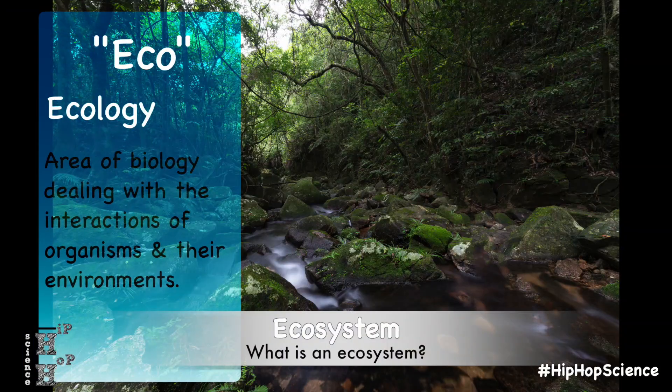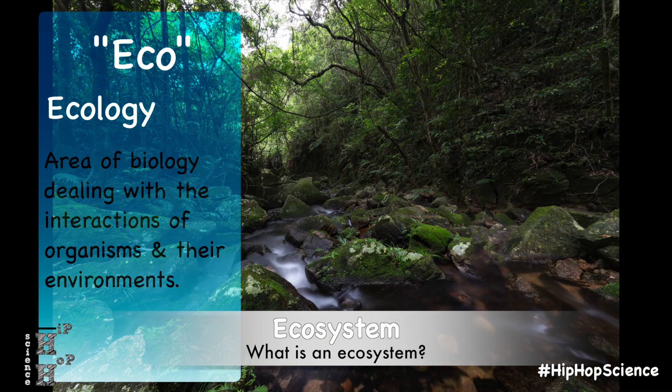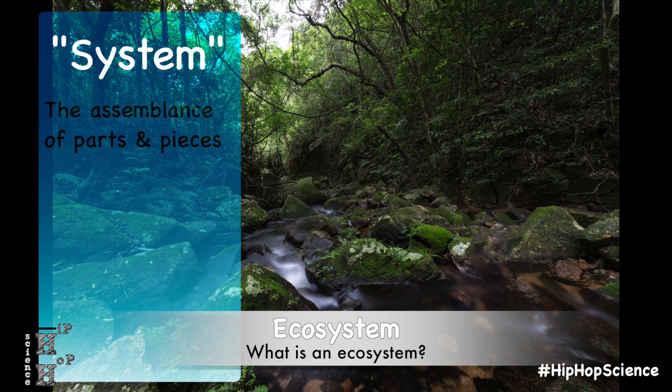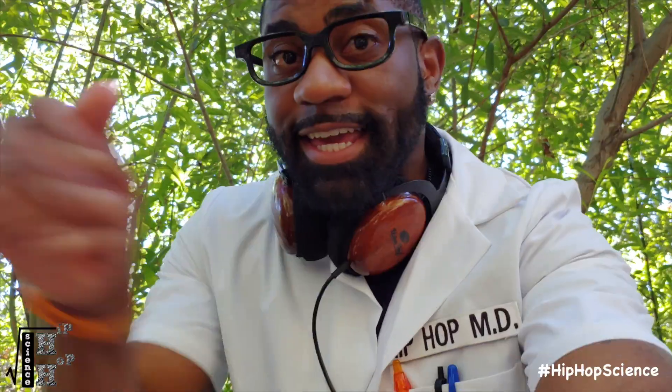When we think of an ecosystem, the easiest way to describe it is to break it into two parts. You have the eco, or the ecology, which is the area of biology dealing with the interactions of organisms and their environment, and the system, which is the assemblance of parts and pieces.